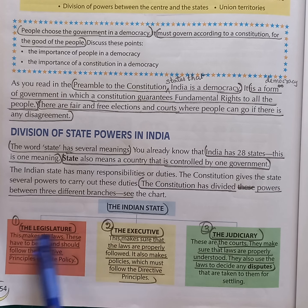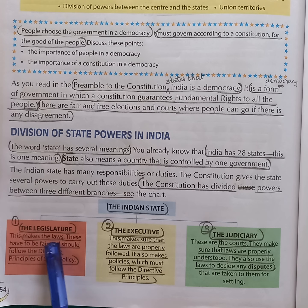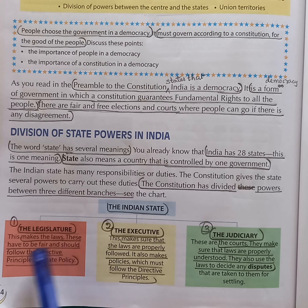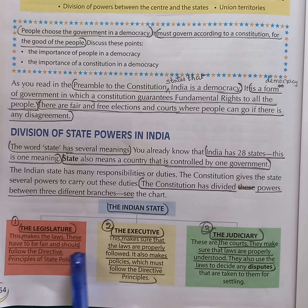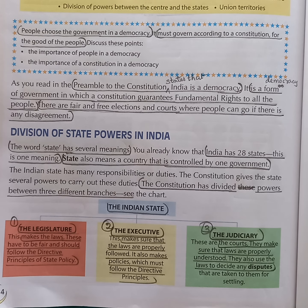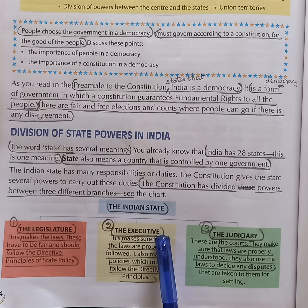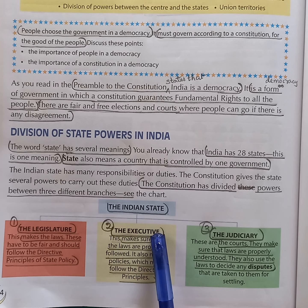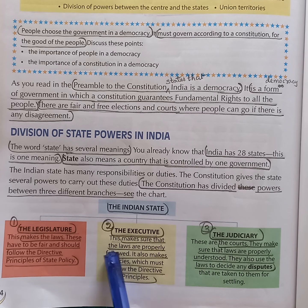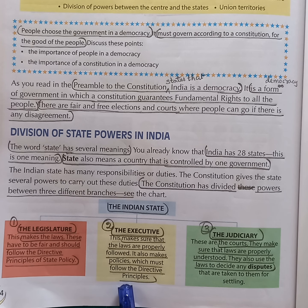What is the role of the legislature? Answer: the legislature makes the laws. These laws have to be fair and should follow the directive principles of state policy. What is the role of the executive? Answer: the executive makes sure that the laws are properly followed. It makes policies which follow directive principles.